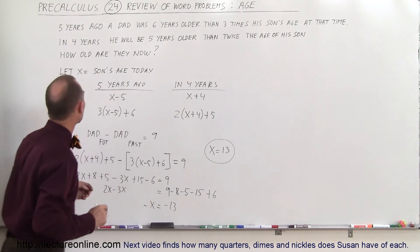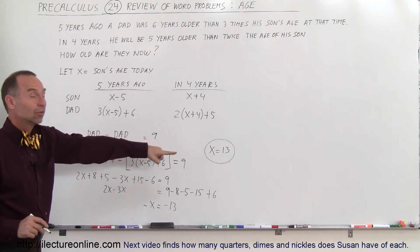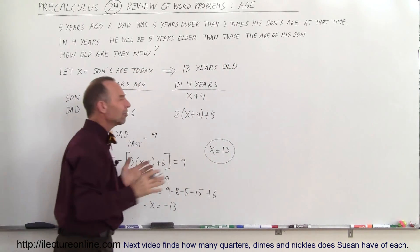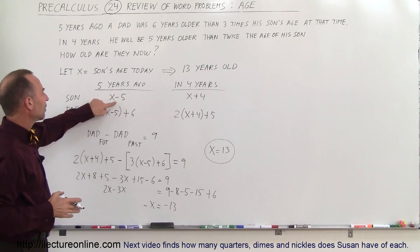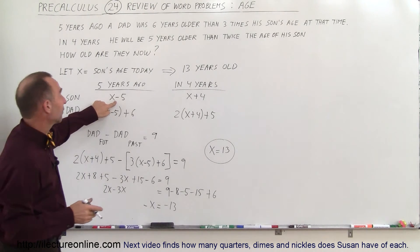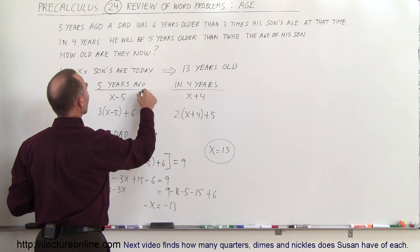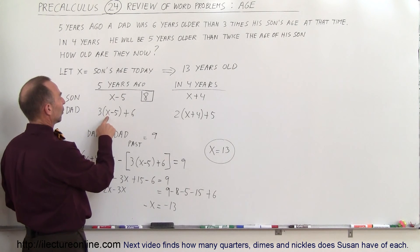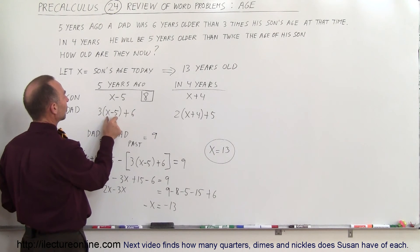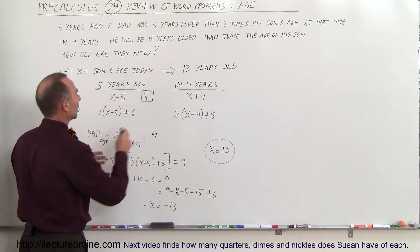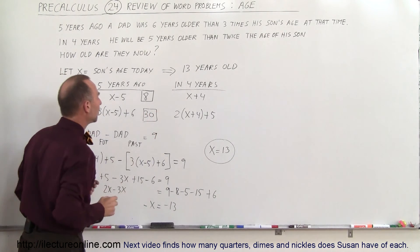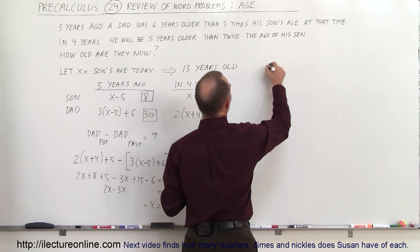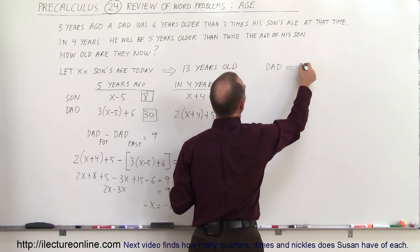Going back to the definition — let X equal the son's age today — that means today the son is thirteen years old. To find the father's age, let's go back five years. Five years ago the son's age was X minus five, which is eight. The dad's age was three times eight is twenty-four, plus six is thirty. So five years ago the dad was thirty, which means today the dad is thirty-five.